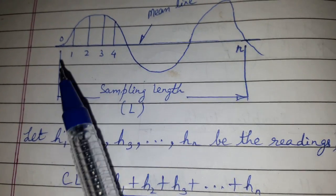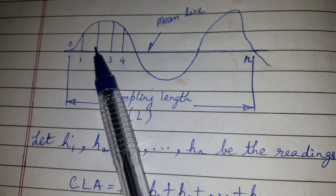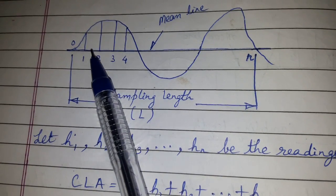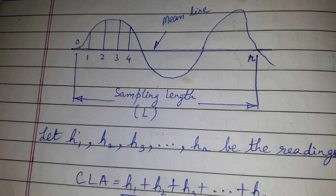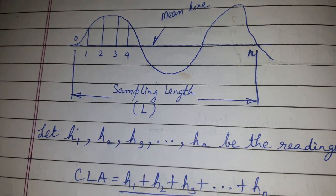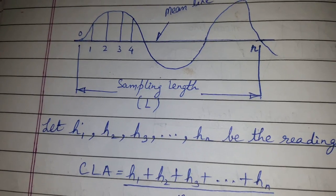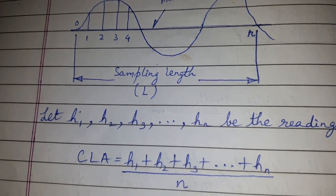and it may happen that between two values there is an important ordinate which is missed. So to avoid this and to avoid the laborious work, it is done in a simplified way using a